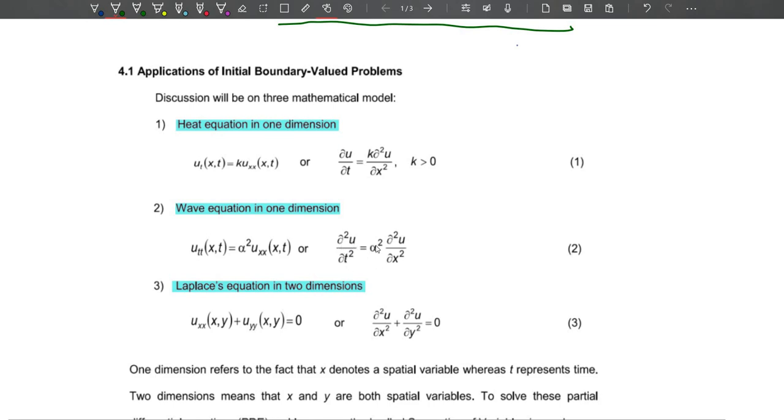The last one is Laplace equation, which is in two dimensions. We have u_xx(x,y) plus u_yy(x,y) equals zero, or del squared u over del x squared plus del squared u over del y squared equals zero. Both are the same.